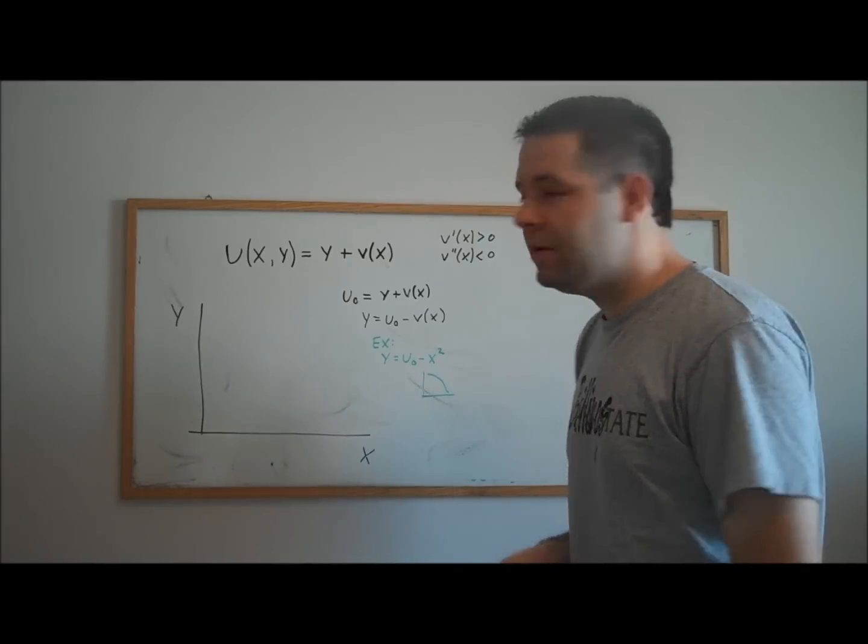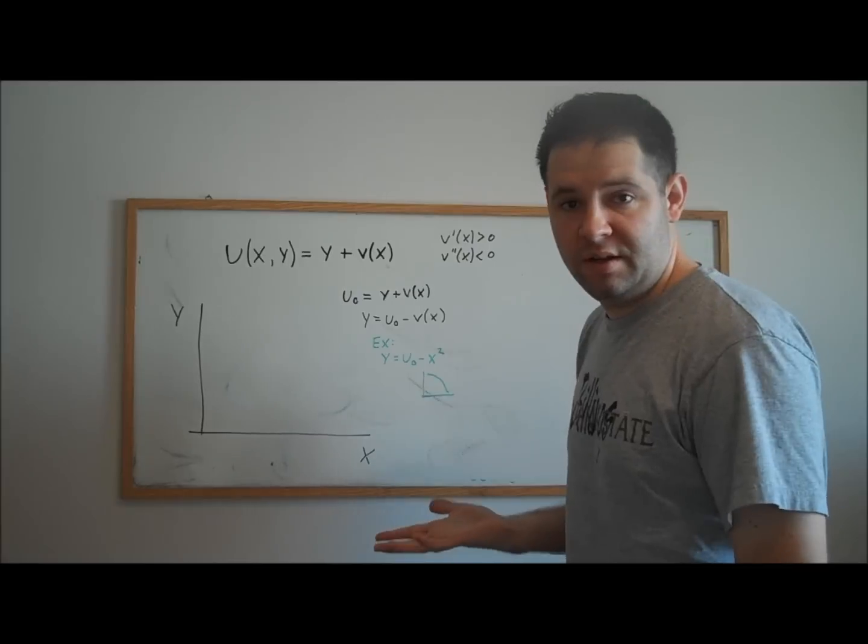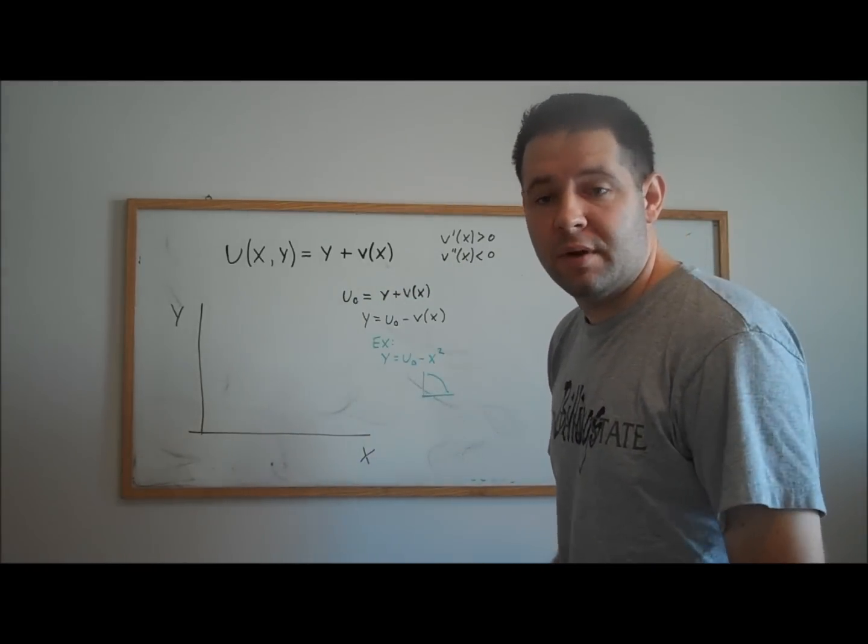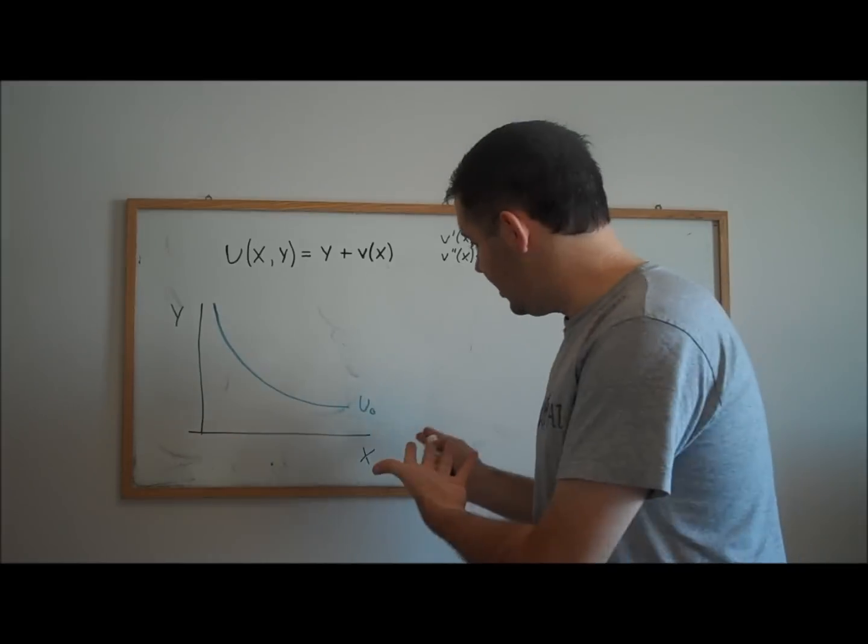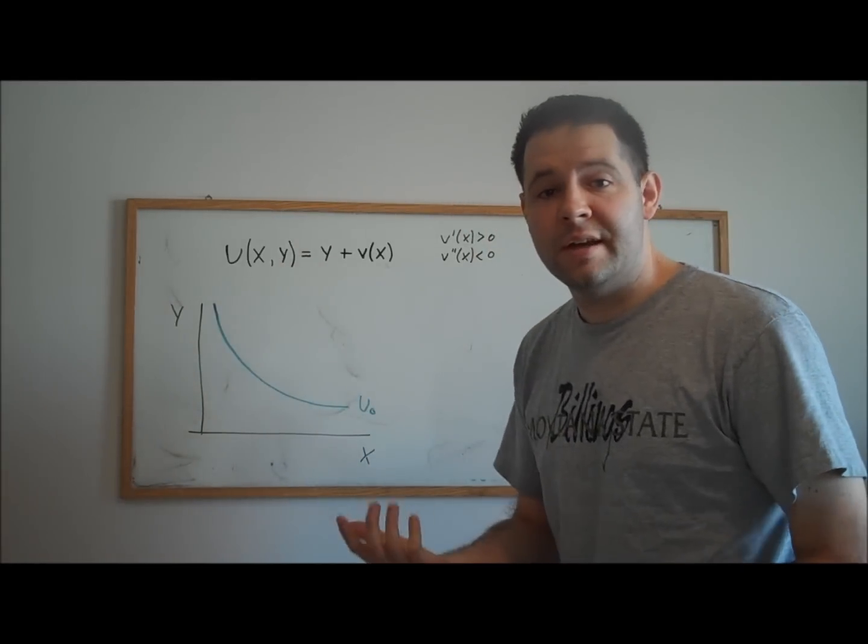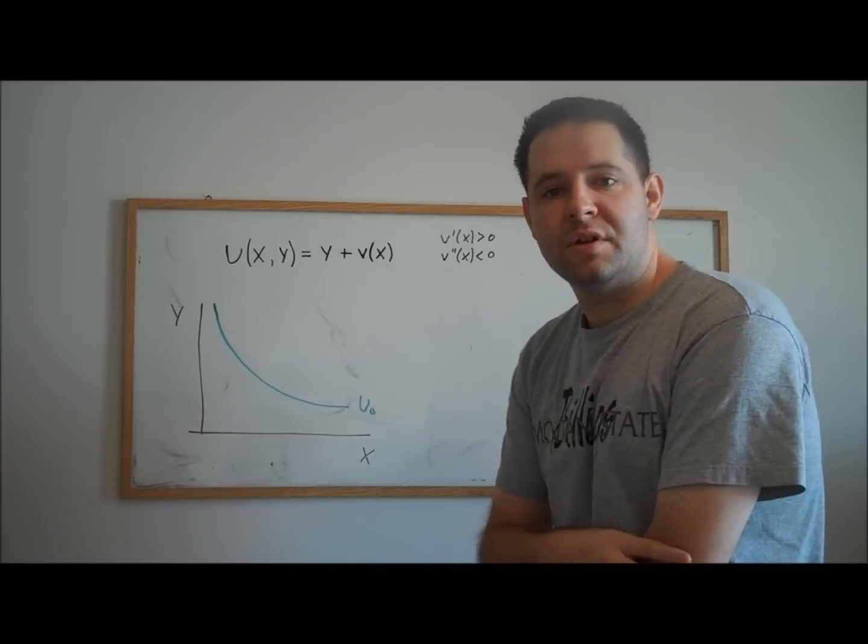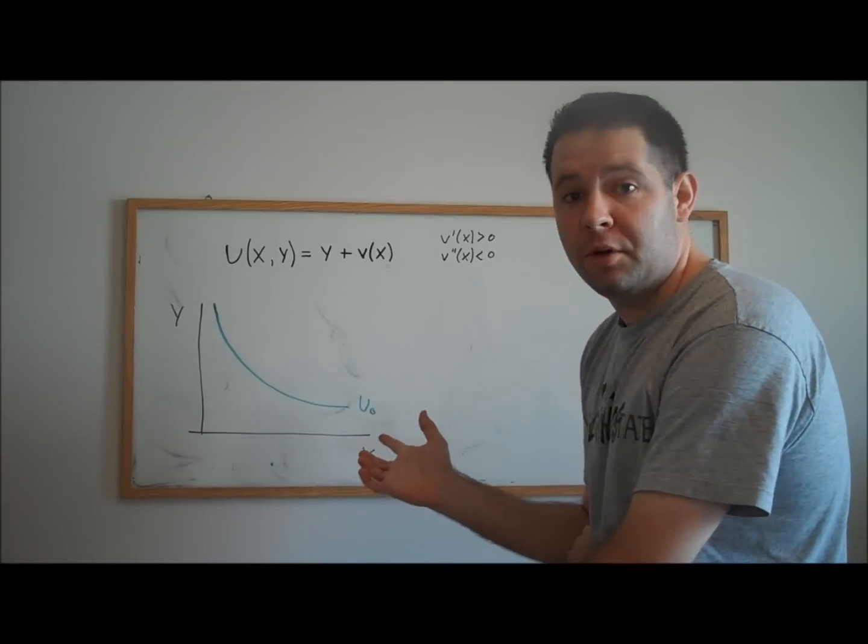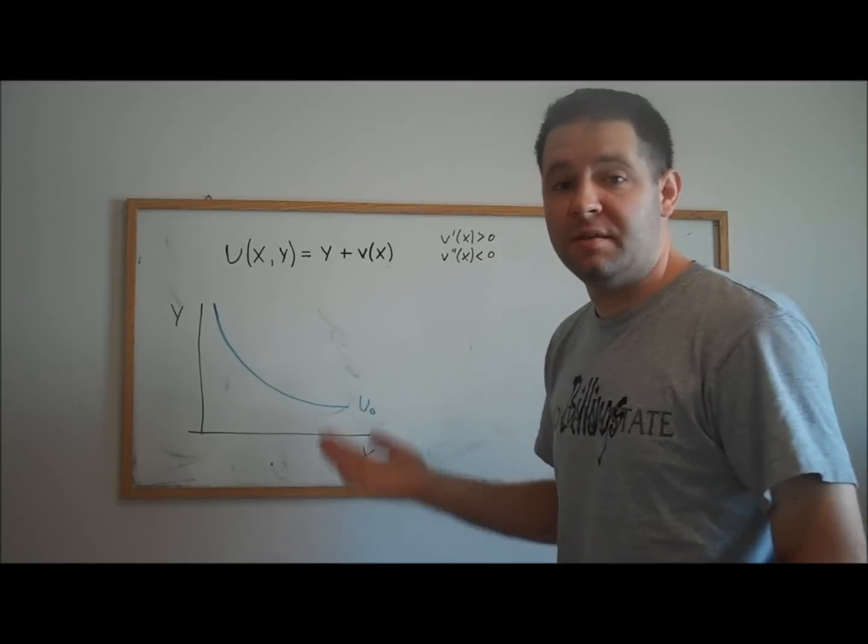It's got a positive derivative. We like positive marginal utility goods. And also, it's got a negative second derivative. And the result is indifference curves that look like this. They're going to be convex to the origin, just like the general form of indifference curves that we've talked about throughout this channel. That's going to be a nice property when we have these assumptions on the v of x term.